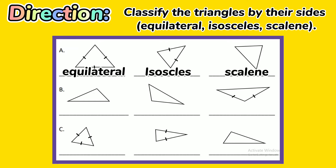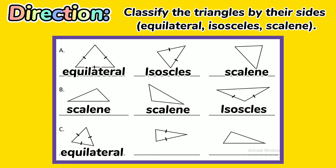Set B: the first two are scalene triangles, and the third one is an isosceles triangle. Set C: the first one is equilateral triangle, the second is isosceles triangle, and the third one is scalene triangle.